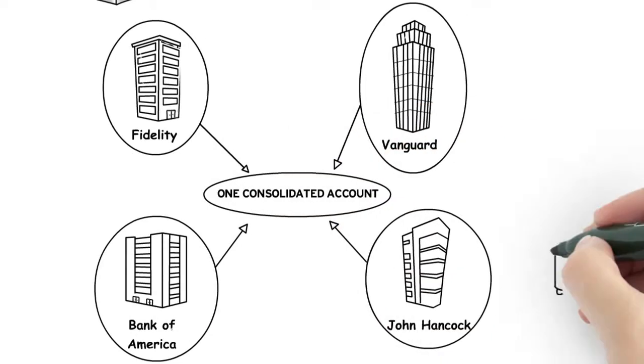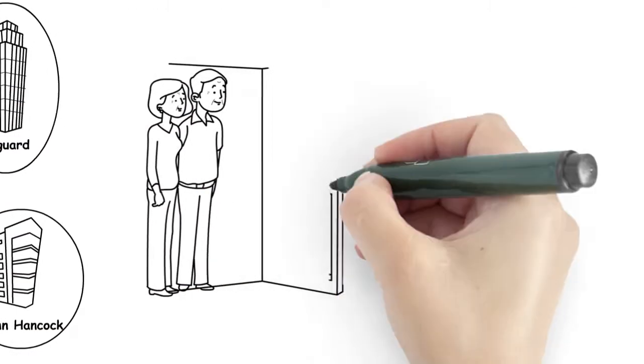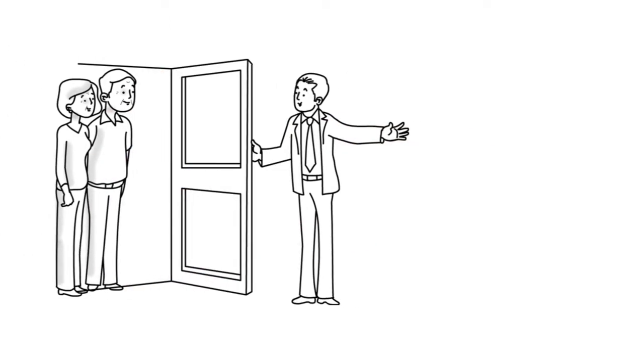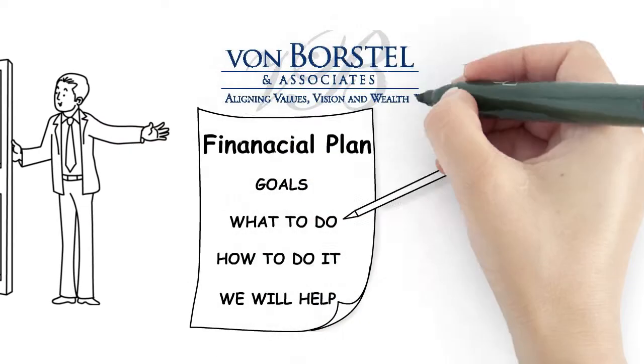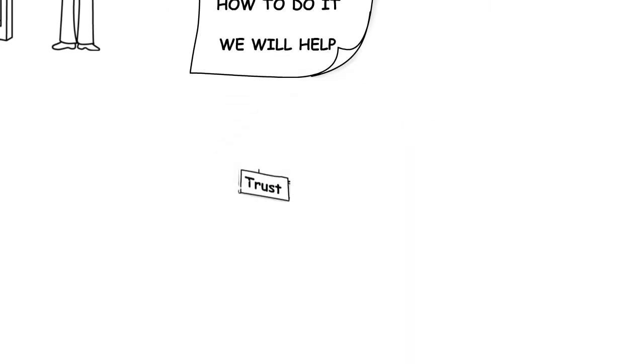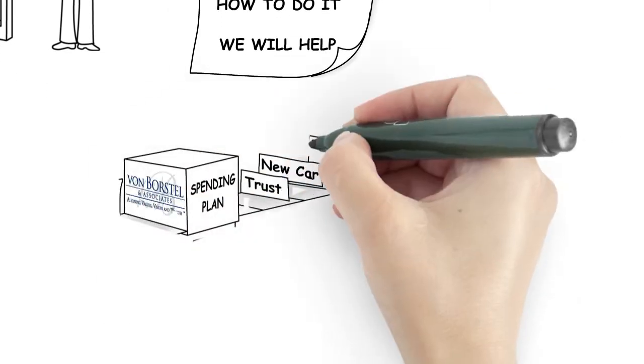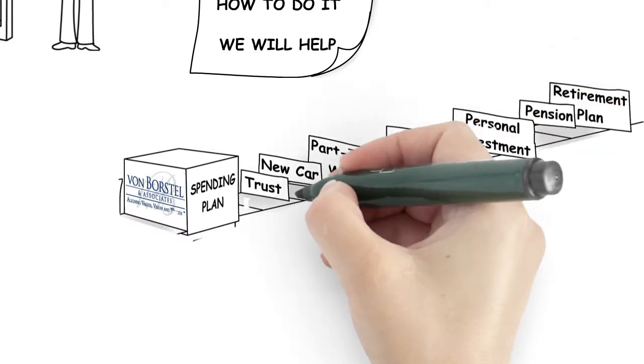In the weeks to come, Von Borstel & Associates provides Ed and Nancy with even more big picture guidance, even putting it in writing. They cover topics like establishing trusts, purchasing a new car, and creating a spending plan that incorporates all their investments and sources of income.